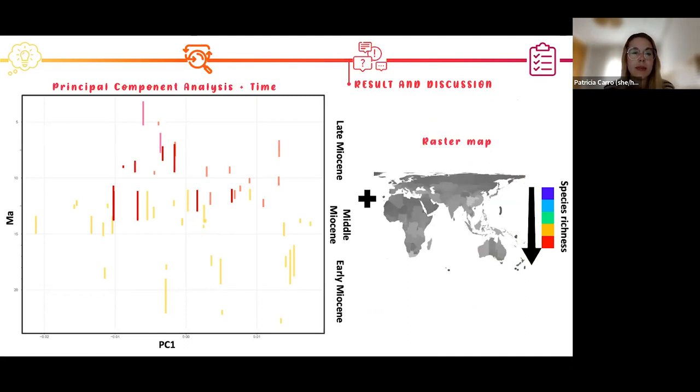So this morphological information is going to be joined with the raster map. I'm going to use this color to analyze the species richness per fossil site. The bluish color explains one species per fossil. And then when we use the reddish color, this means that there are more species per fossil sites. I'm going to divide the PC1 in three different periods of time of the Miocene to explain better the morphological and geographical difference of this tribe.